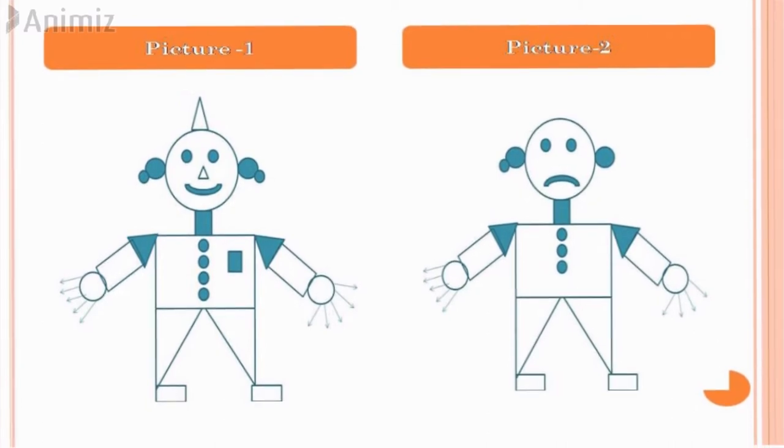You can see there are two pictures which consist of many shapes, but there is a difference. One picture is complete and the second picture has many missing shapes.